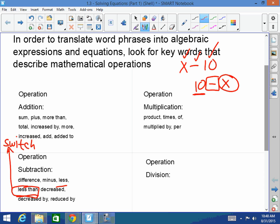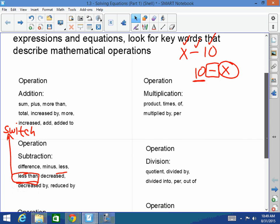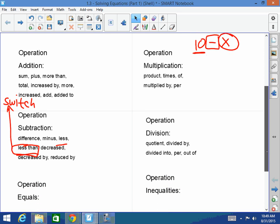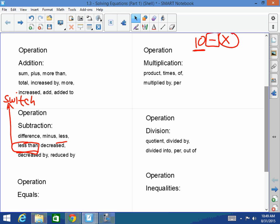And then division is quotient, divided by, divided into, per, and out of. Per, again, Mr. Morrill, remember what I told you. Per can be multiplication or division.